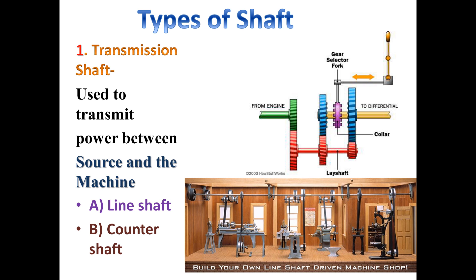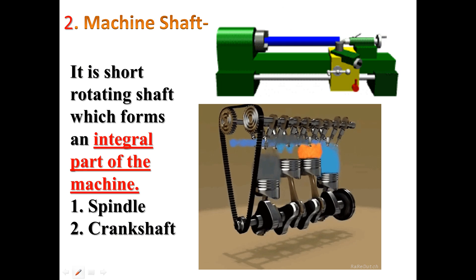Types of shaft: the first type is the transmission shaft. A transmission shaft is used for transmitting power between the source and a particular machine. Transmission shafts are further classified into line shaft and counter shaft. A line shaft is a shaft driven from a prime mover — such as an electric motor or engine — from a primary power source.